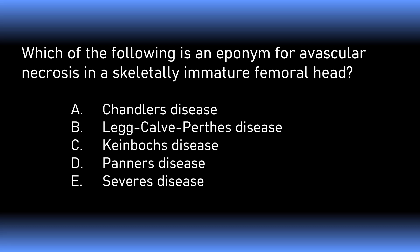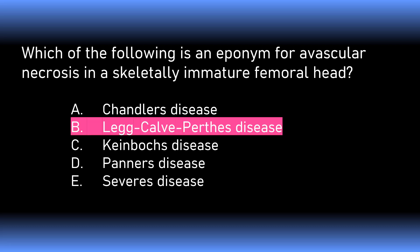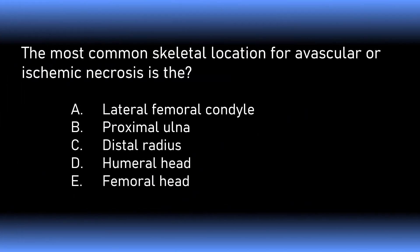Let's go through some review questions. Which of the following is an eponym for avascular necrosis in a skeletally immature femoral head? The options are: Chandler's disease, Legg-Calvé-Perthes disease, Kienböck's disease, Panner's disease, or Sever's disease. Legg-Calvé-Perthes disease is the correct answer — Chandler's disease applies to adults. The most common skeletal location for avascular necrosis is the femoral head.